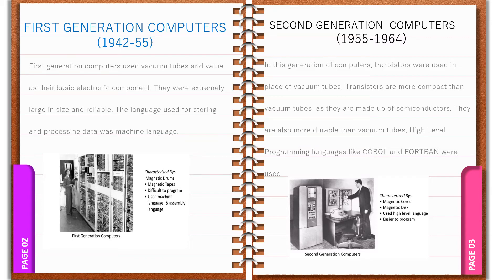The second generation of computers were developed from 1955 to 1964. These computers used transistors in place of vacuum tubes. Transistors are more compact than vacuum tubes as they are made up of semiconductors, and are also more durable. They were much smaller in size and required lesser space for installation. Magnetic tapes were used as secondary storage. They consumed lesser power and therefore generated lesser heat compared to first generation computers, though air conditioning was still required. They were highly reliable and less prone to hardware failure, about 10 times faster than first generation computers. High level languages like COBOL and FORTRAN were used.